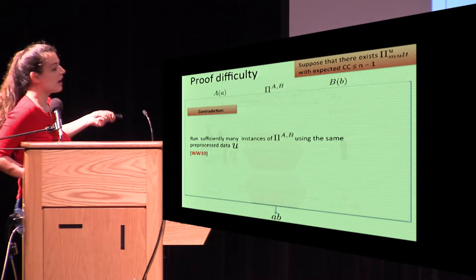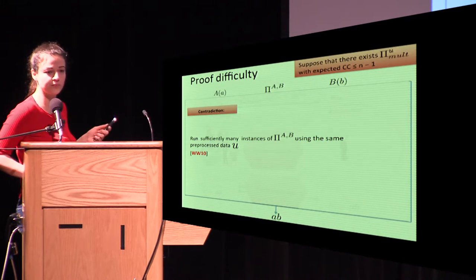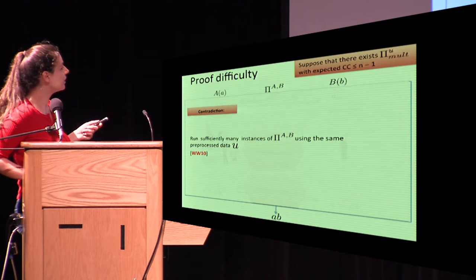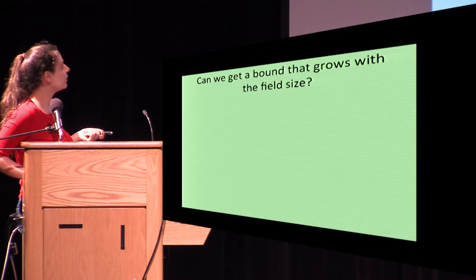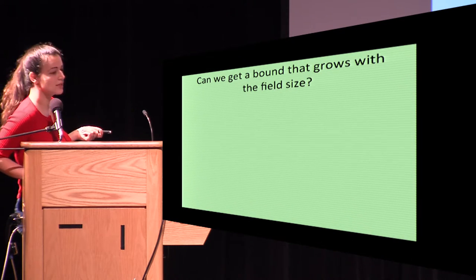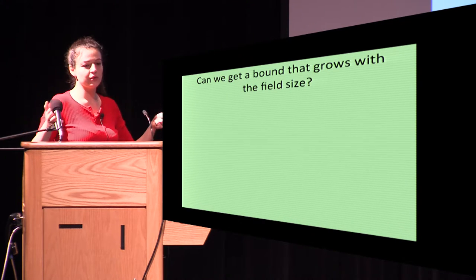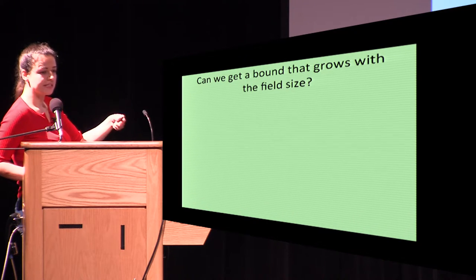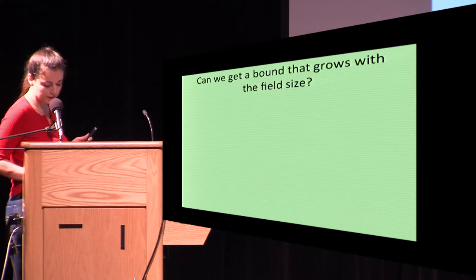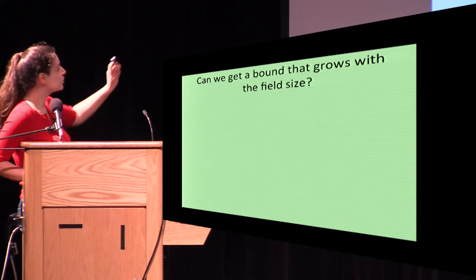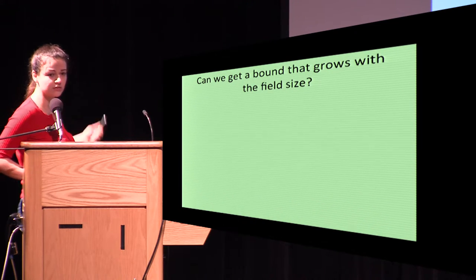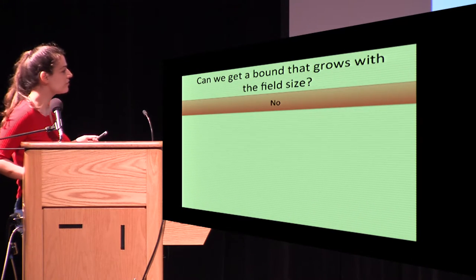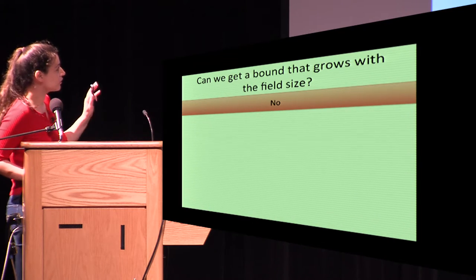For arbitrary secret sharing there are even more complications. Now I want to address whether the messages must grow with the field size. The honest majority case requires sending 2t+1 messages, but must each message grow with the field size? Current protocols do have communication complexity depending on field size, but surprisingly the answer is no.